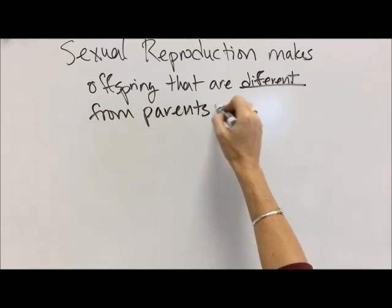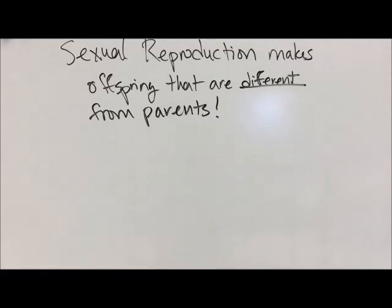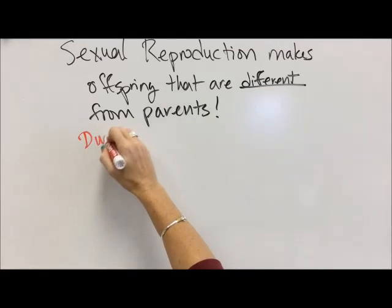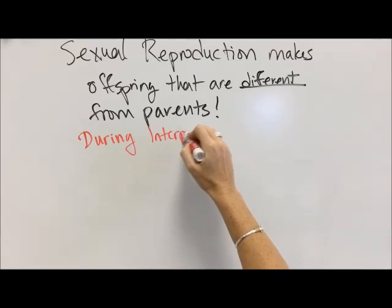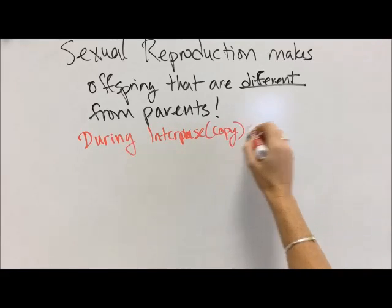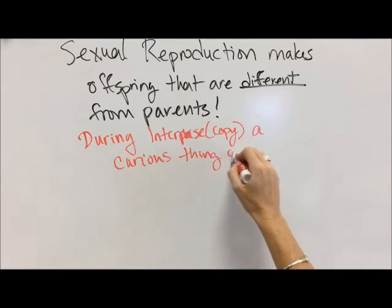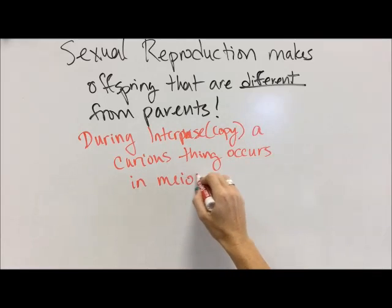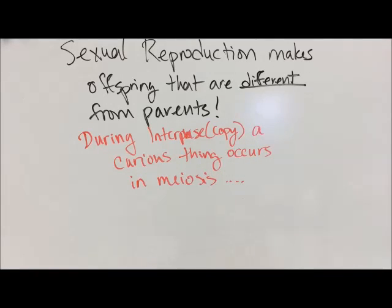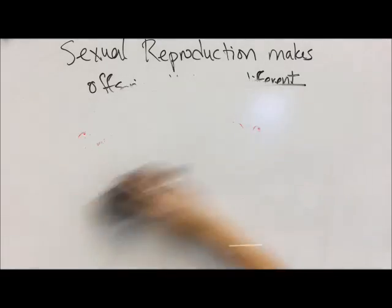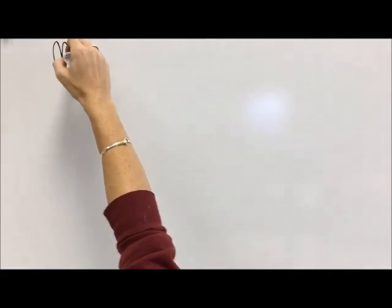Sexual reproduction makes offspring that are different from the parents. This is important — we talked about this in the previous video about sexual and asexual reproduction. This happens because, first of all, you get half the information from each parent. But secondly, during interphase — the one round of interphase — a curious thing occurs during meiosis. This curious thing is called crossing over.